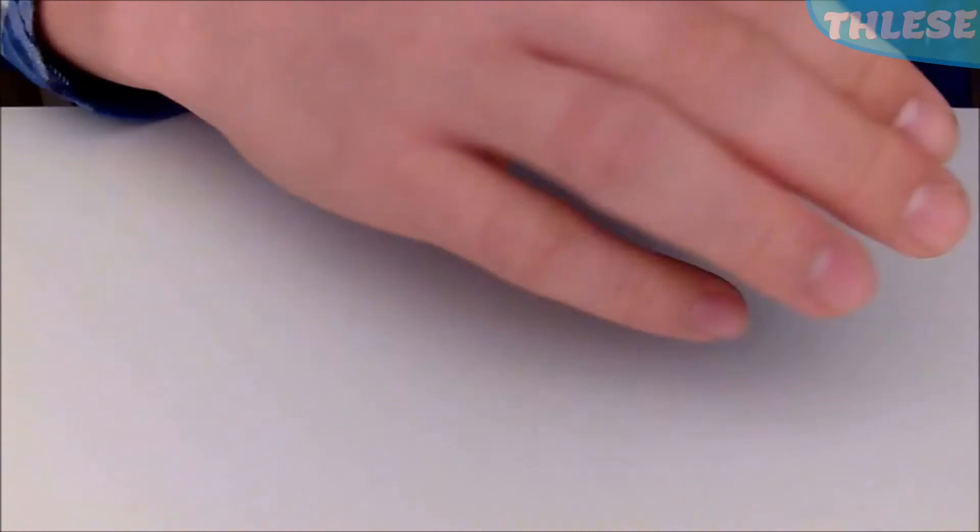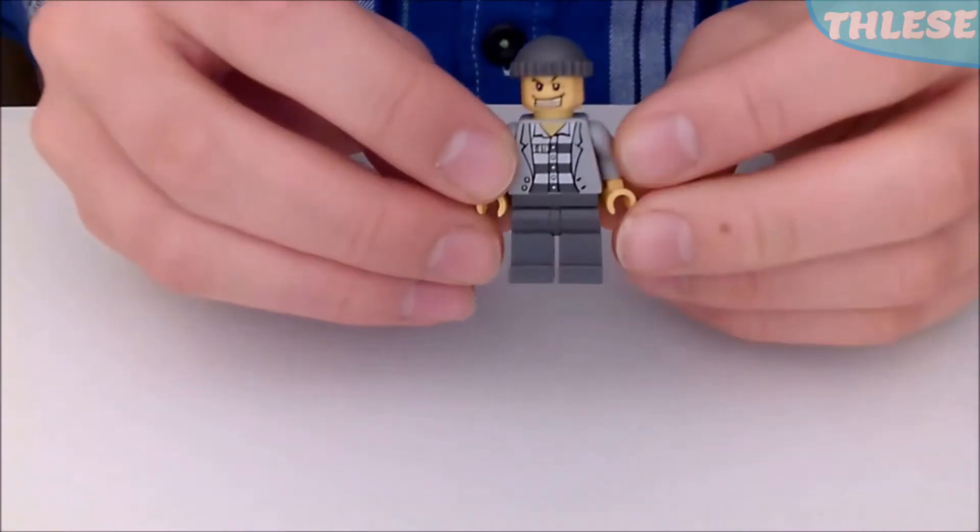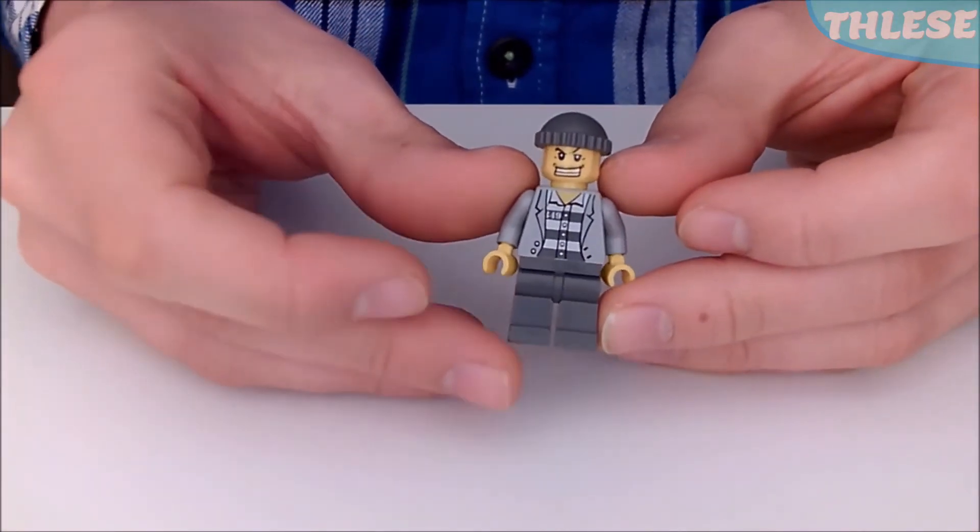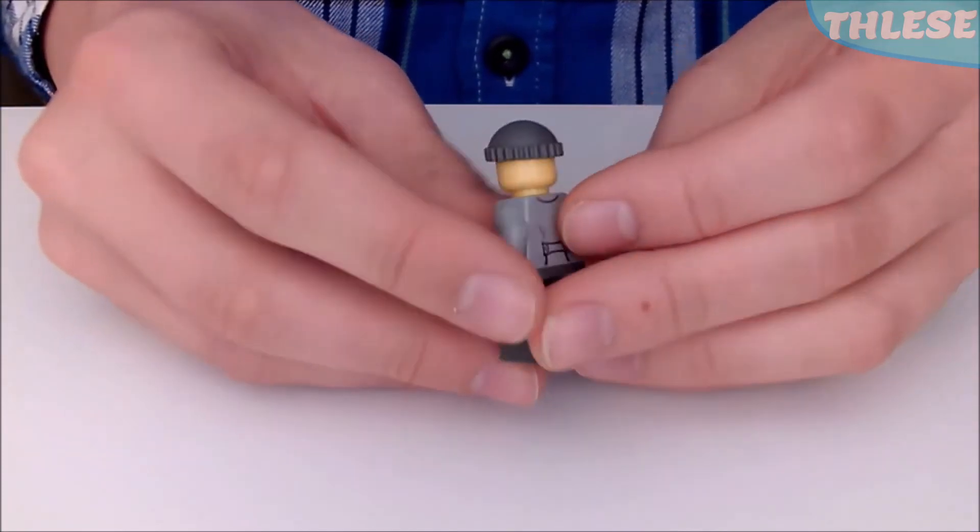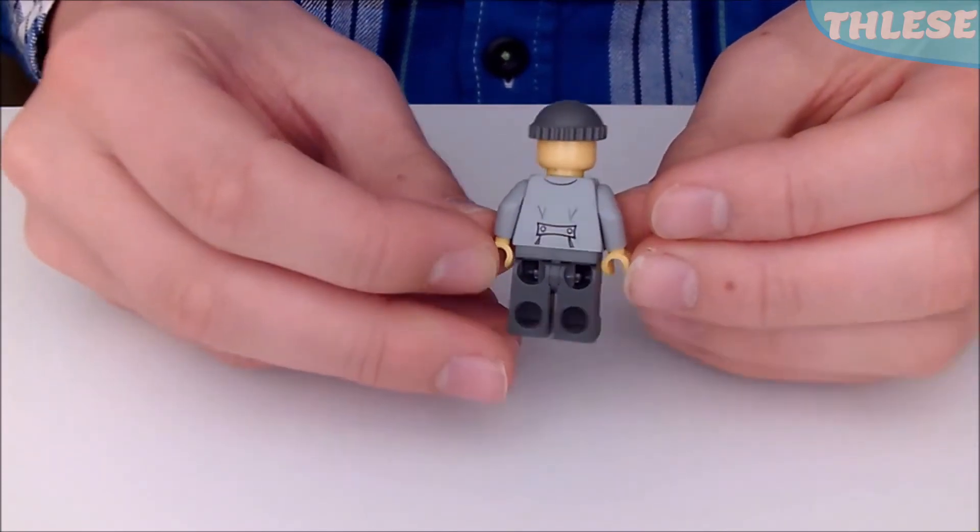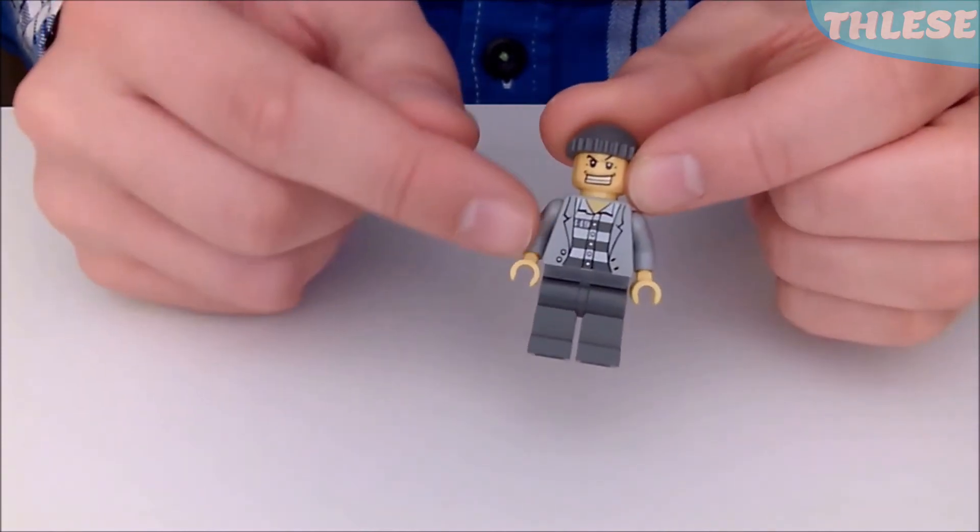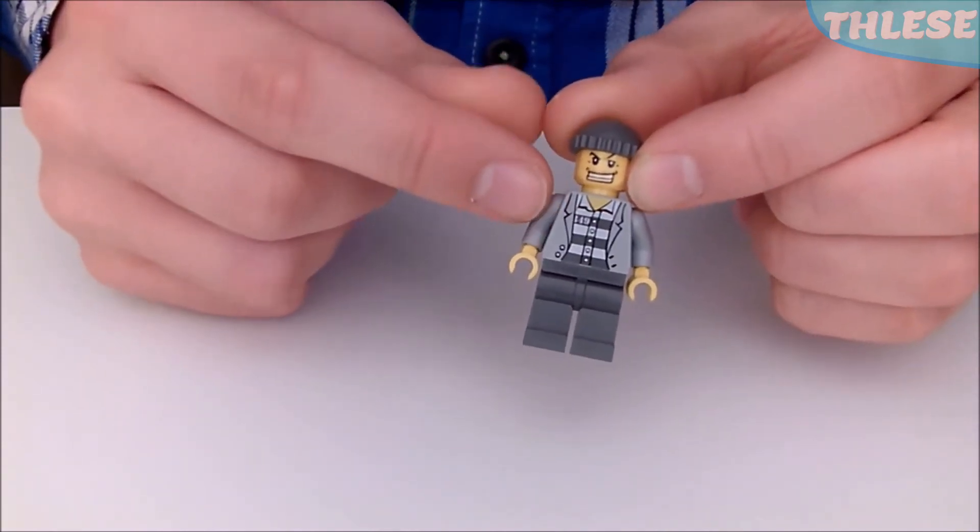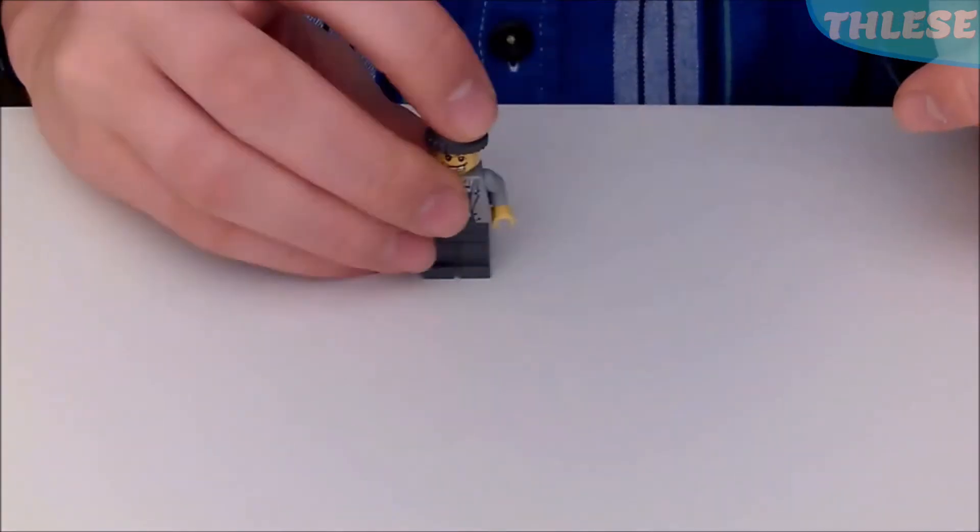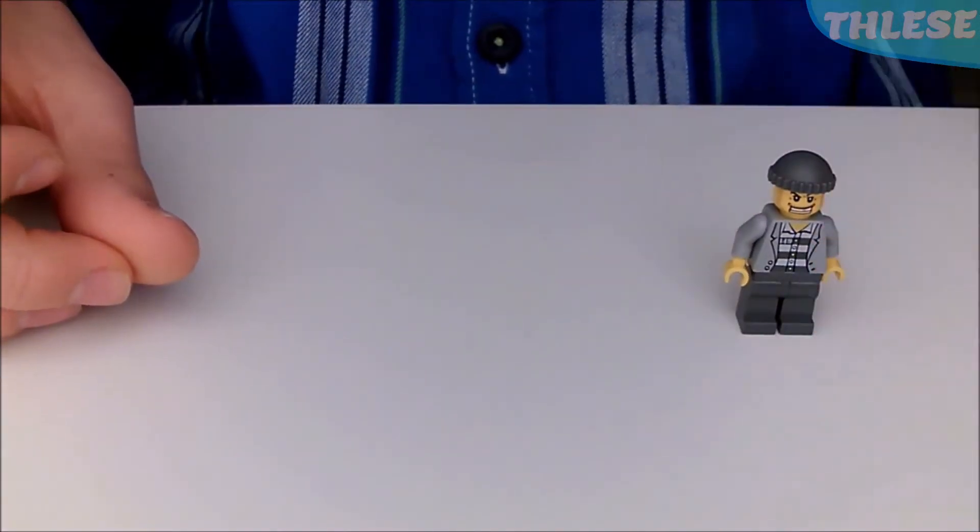Alright, so I'm going to start you off by showing you the minifigures. Now, this comes with four minifigures. So number one over here is this guy, some kind of master criminal kind of guy. Nice torso print there. He has the gray top, which is unlike the other ones in the same year. Where should I put him? I'll put you over here.